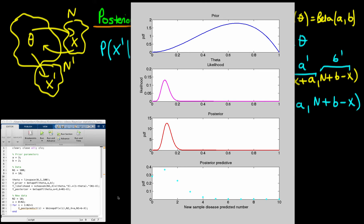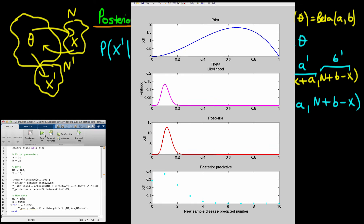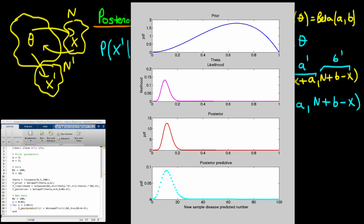Finally, if I increase my new sample size to 100 — so we're predicting the number of people out of 100 — we now expect the posterior predictive to mirror the posterior a lot more closely, because we're no longer dealing with integers that are so widely spaced relative to where the posterior distribution is actually changing.